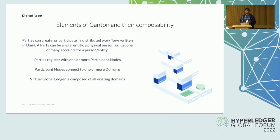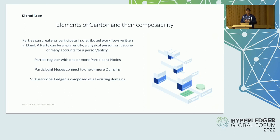In Canton, parties can create or participate in distributed workflows written in DAML. A party can be a legal entity, a physical person, or just one of many accounts for a person or an entity. Parties register with one or more participant nodes.